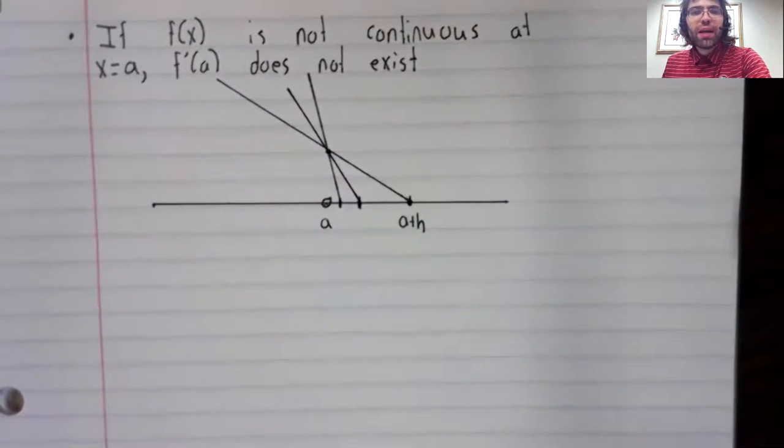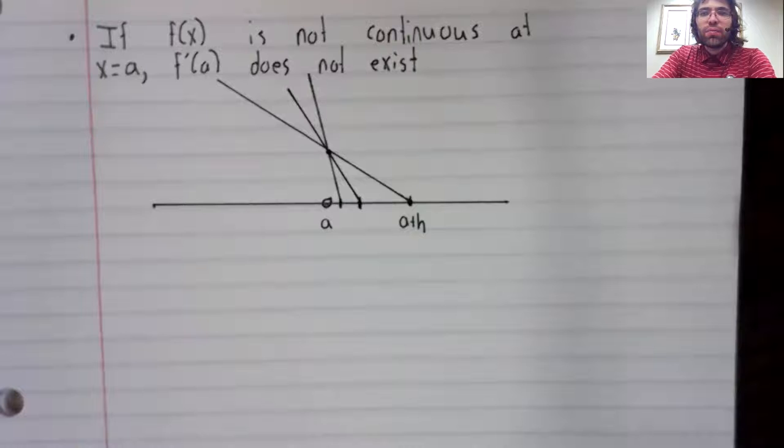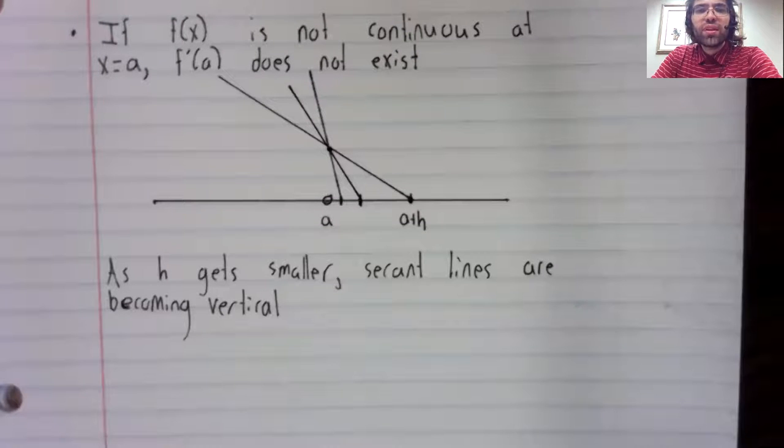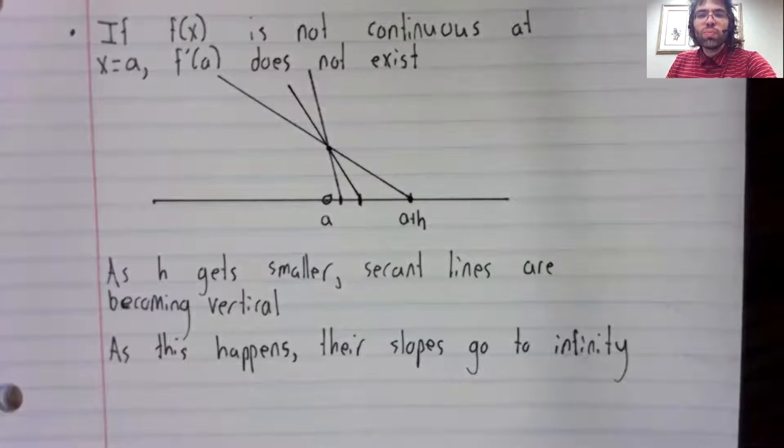The average rate of change on this interval is the slope of this third secant line. And what's happening here is that as h is getting smaller, the secant lines are becoming vertical. As that happens, their slopes are getting bigger and bigger.